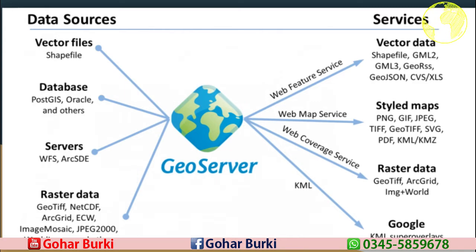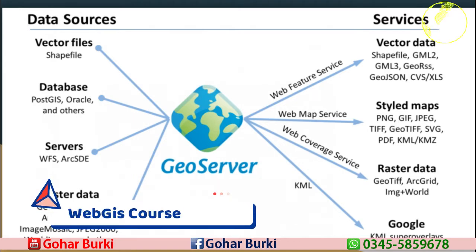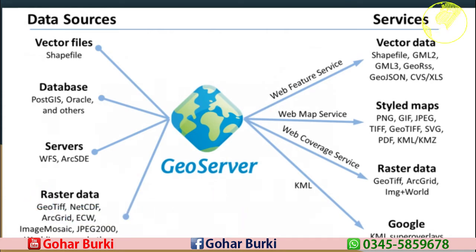There are many data sources: vector data sources can be databases like PostGIS, Oracle, and other databases, or services like WFS. It also supports raster datasets such as GeoTIFF, NetCDF, ImageMosaic, and JPEG2000. GeoServer stores these different kinds of data sources on the server and then allows users to access the data through WFS, WMS, WCS, and KML services.